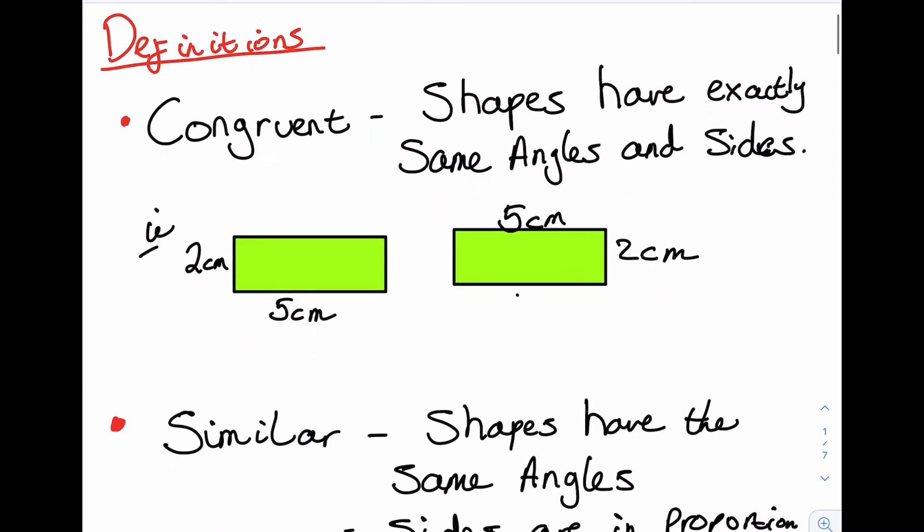The first definition we want to look at is congruent. In maths, congruent means shapes have exactly the same angles and sides. In other words, the shapes are exactly the same.